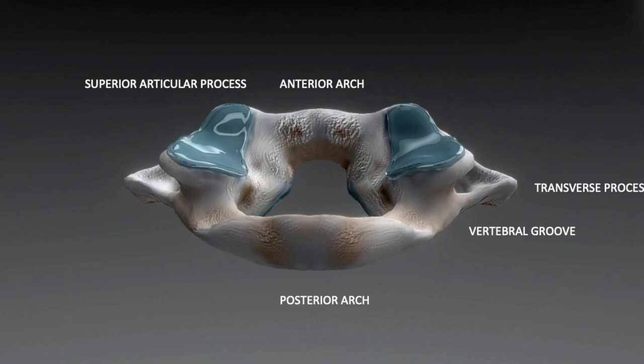The posterior arch forms about two-fifths of the circumference of the ring. It gives origin to the recti capitis posterioris minoris and ligamentum nucae.